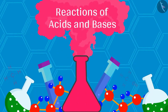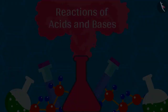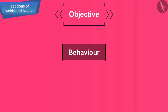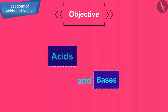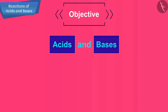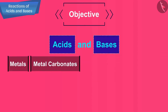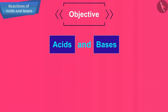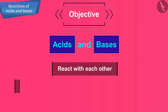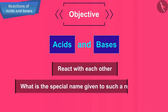The topic that we are going to cover in this session is reactions of acids and bases. We will also learn how acids and bases react with metals, metal carbonates, metal hydrogen carbonates, metallic oxides, and non-metallic oxides. We will also learn how acids and bases react with each other and what special name is given to such a reaction.